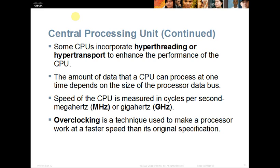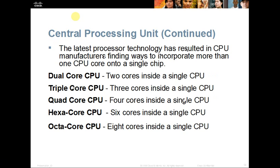We have different types of central processors: dual-core, triple-core, quad-core, hexa-core, and octa-core. This is the number of cores within a processor, which allows our processor to do more things, enabling multitasking and greater productivity. One thing to note about a triple-core processor is that it is really a quad-core processor with one of the cores turned off.